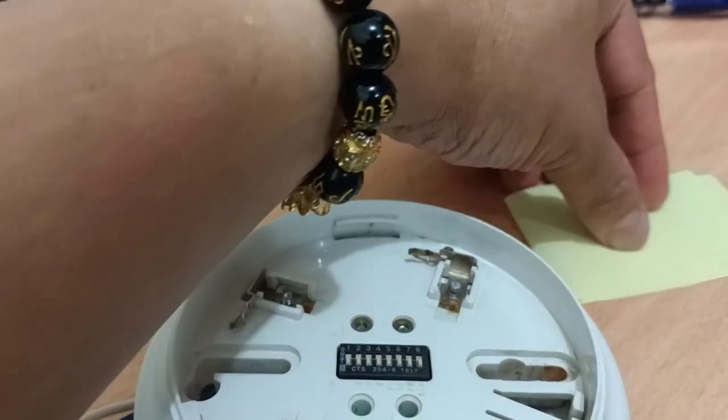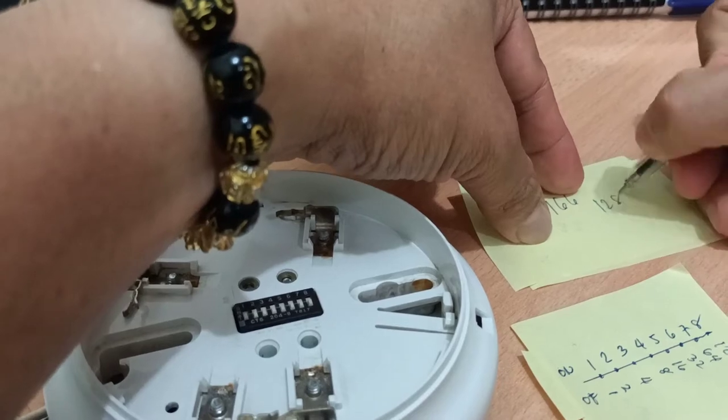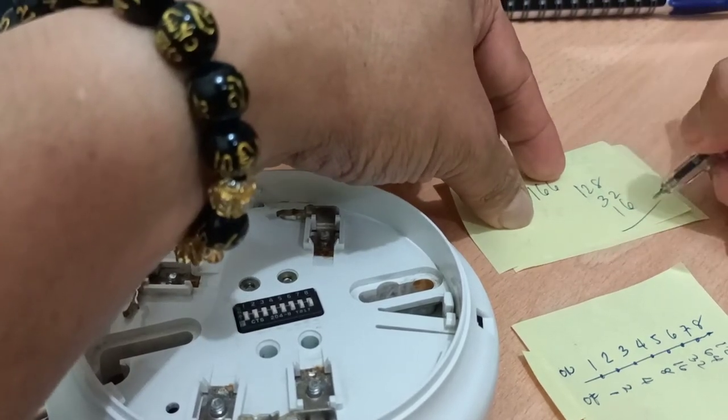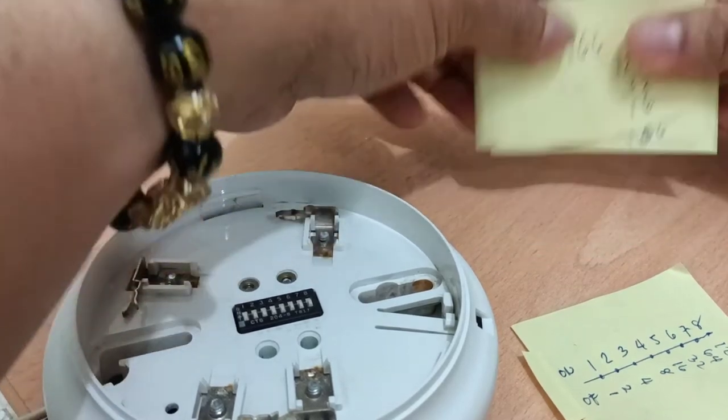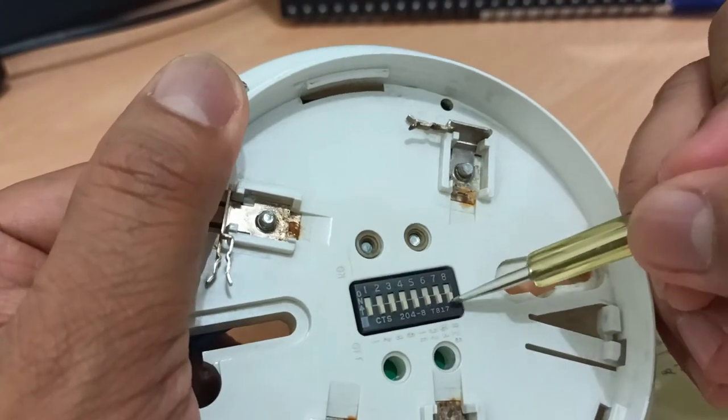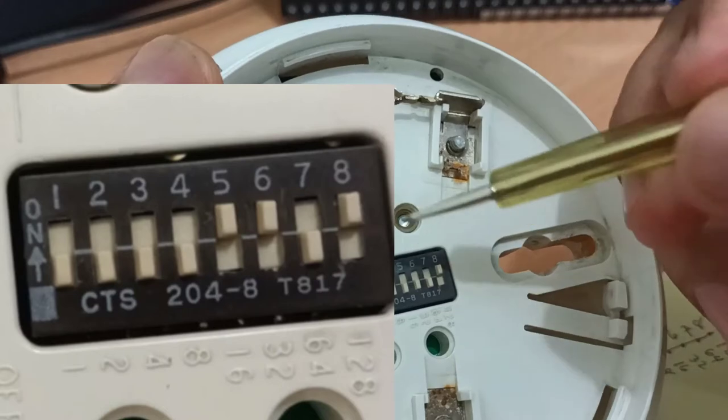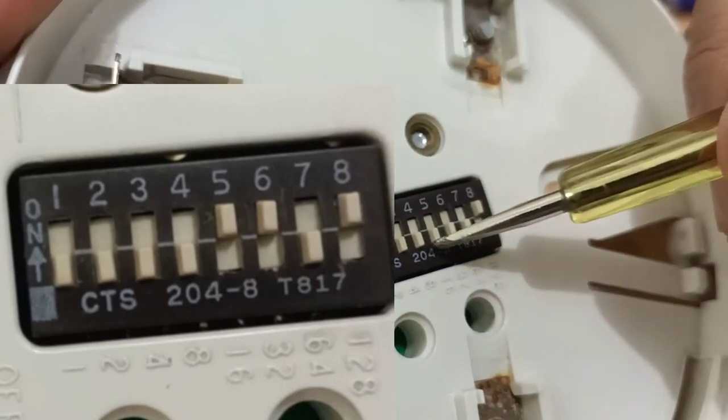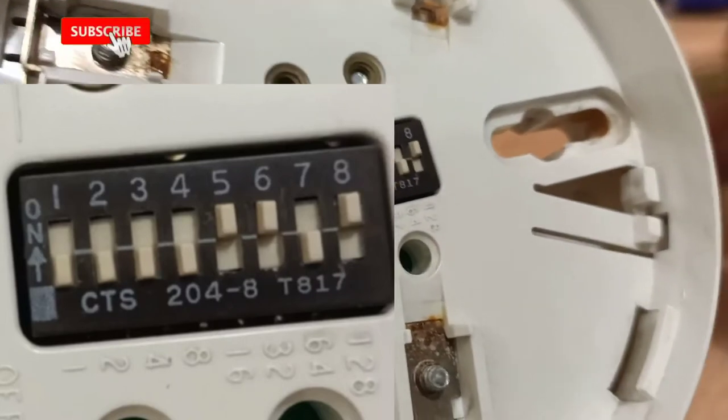So we need to put one-two-eight and thirty-two and sixteen. So sixteen, one sixty-six, this one's exactly. So you need to turn on number eight, one-two-eight, then thirty-two is number six on, and number sixteen, number sixteen is number five.